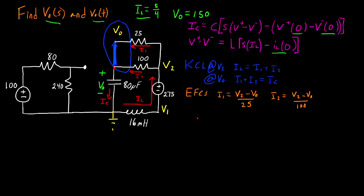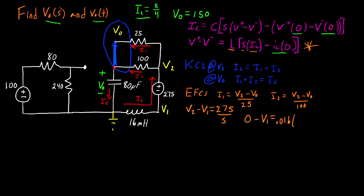Now I can write the equation for the 275-volt source. The equation for that is the potential difference: V2 − V1 = 275/s, because we're using the s-domain equation after taking the Laplace transform. Now we can write the equation for the inductor. Because the current is flowing in this direction, my V+ is this node, so I write: 0 − V1 = L × (s·I_L − i(0)), which gives us 0.016 × (s·I_L − 5/4). That takes care of the equation for the inductor.